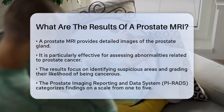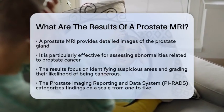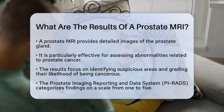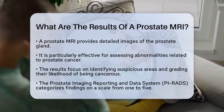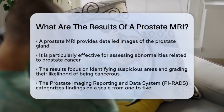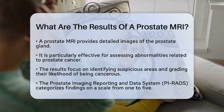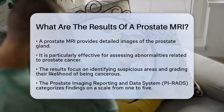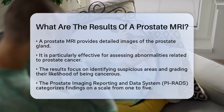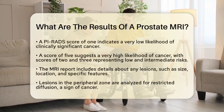One key aspect of prostate MRI results is the Prostate Imaging Reporting and Data System, commonly known as PIRADS. This scoring system helps radiologists categorize findings on a scale from 1 to 5. A score of 1 indicates a very low likelihood of clinically significant cancer, while a score of 5 suggests a very high likelihood. Scores of 2 and 3, representing low and intermediate likelihoods respectively, often lead to further evaluation. A score of 4 indicates a high likelihood of cancer.